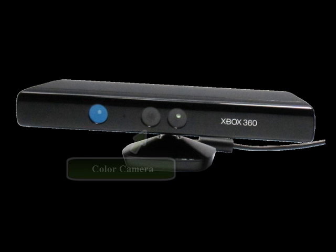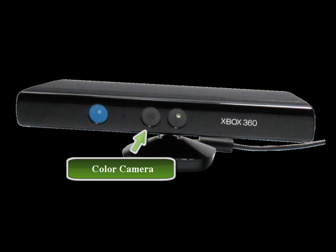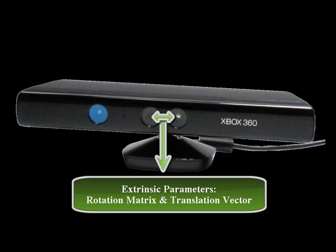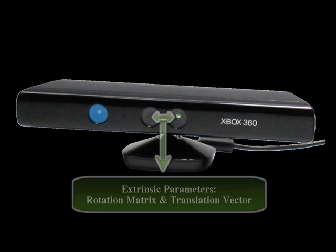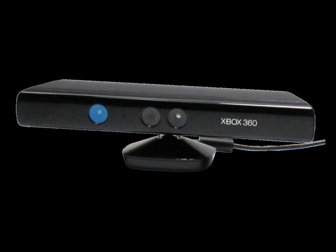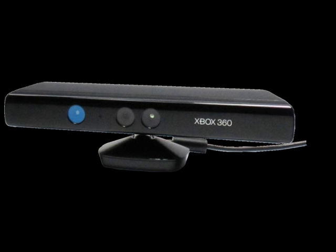The color camera is used to provide the color for the depth points obtained by the Kinect's depth sensor. This is possible by accurately knowing the correct extrinsic parameters between the color and IR cameras. These parameters can be determined by a camera calibration procedure. Merging both color and IR camera perspectives using the extrinsic parameters solves the correspondence problem between depth and color, thus creating a point cloud.